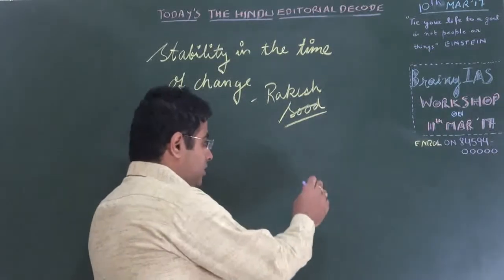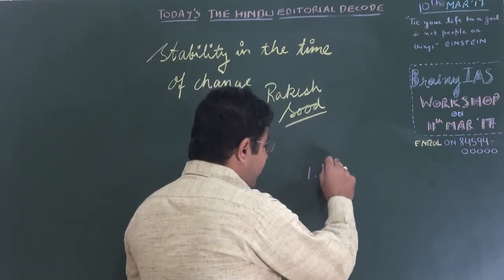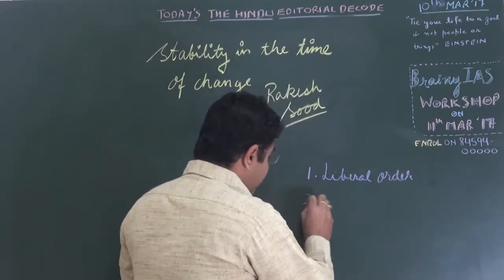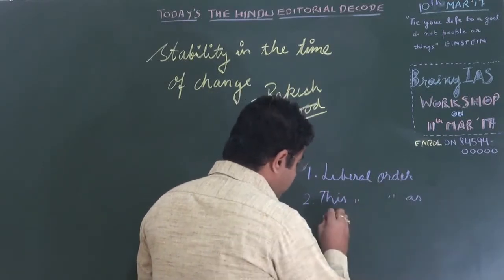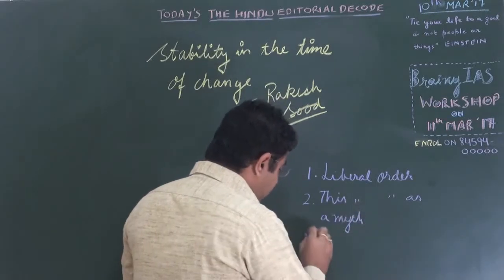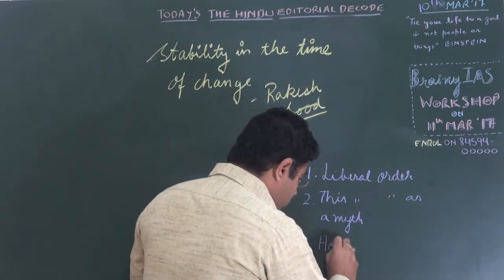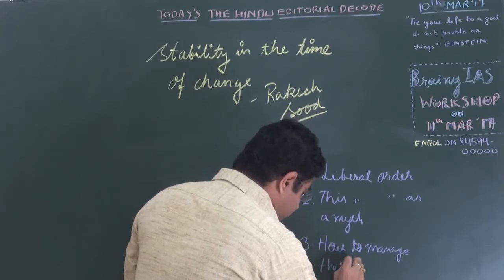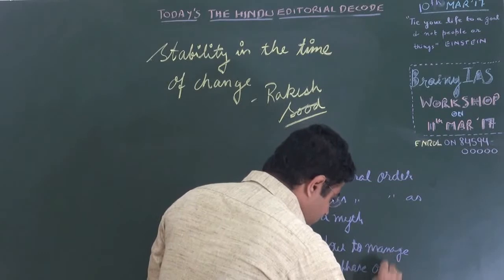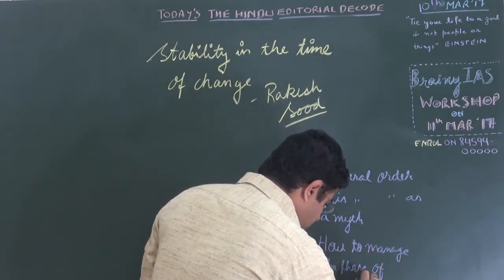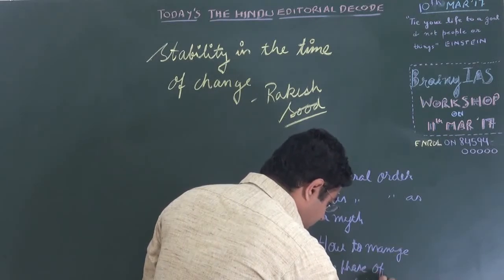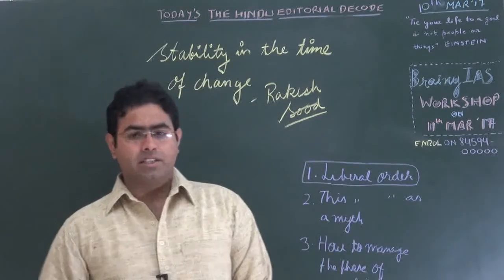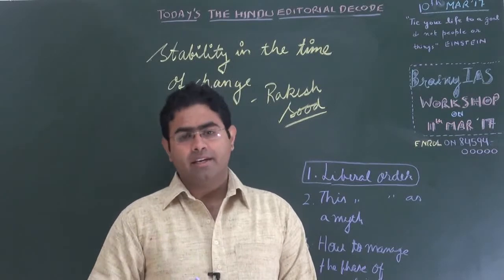In order to understand this editorial, we will be learning three important contours. The first is about what is meant by liberal order, secondly the liberal order as a myth, and thirdly how to manage the face of uncertainty.